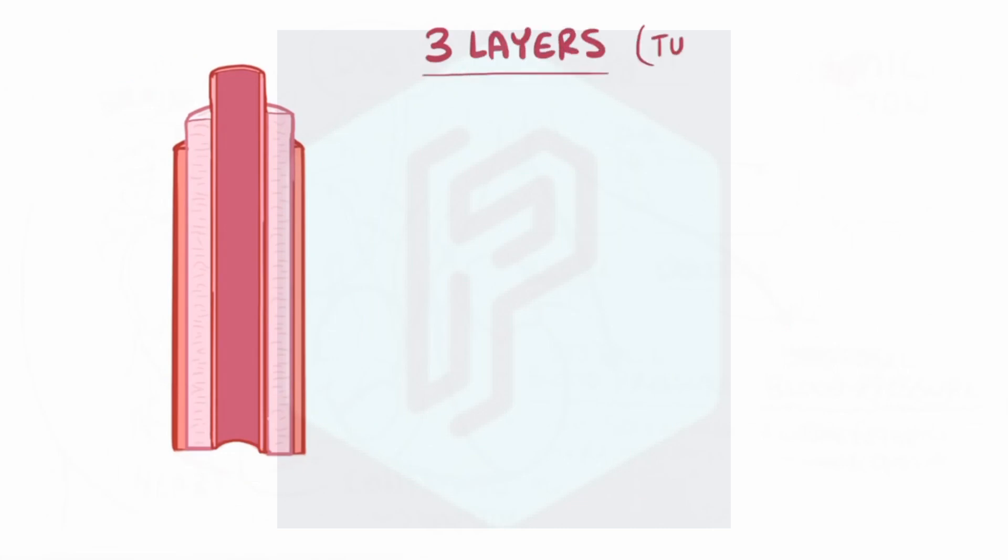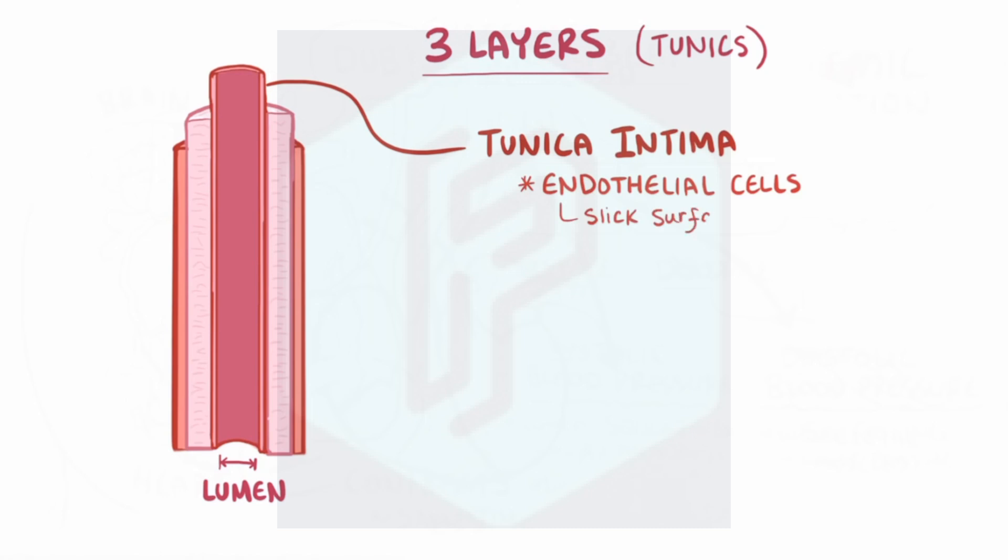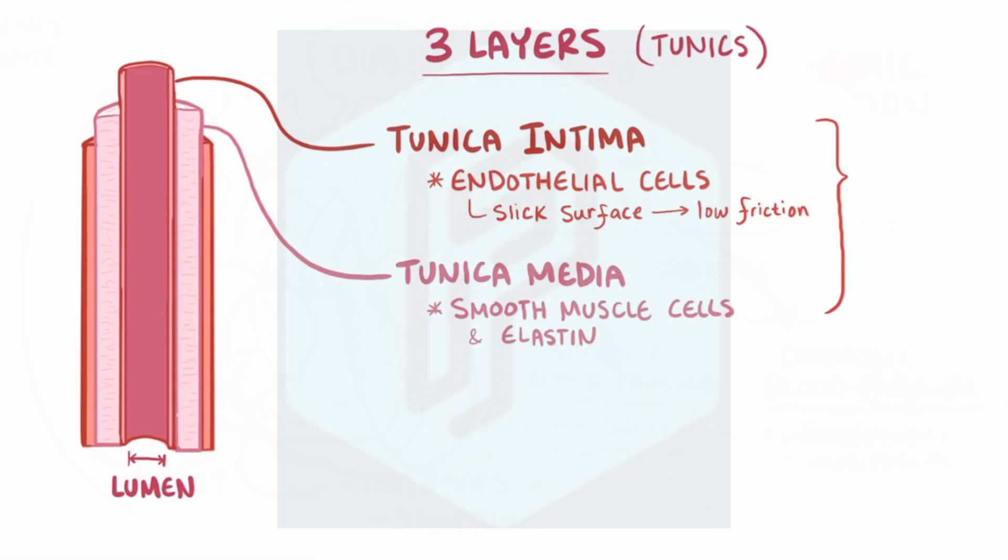If we take a closer look at blood vessels, they have three layers, also called tunics or coverings, that surround the vessel lumen, which is the hollow part of the vessel that holds the blood. The innermost tunic is called the tunica intima, which includes the endothelial cells which creates a slick surface that minimizes friction for blood moving through it. Next, there's the tunica media, or middle tunic, which is mostly made of smooth muscle cells and sheets of elastin protein. Both the cells of the tunica intima and tunica media generally get the nutrients they need from the blood in the lumen.